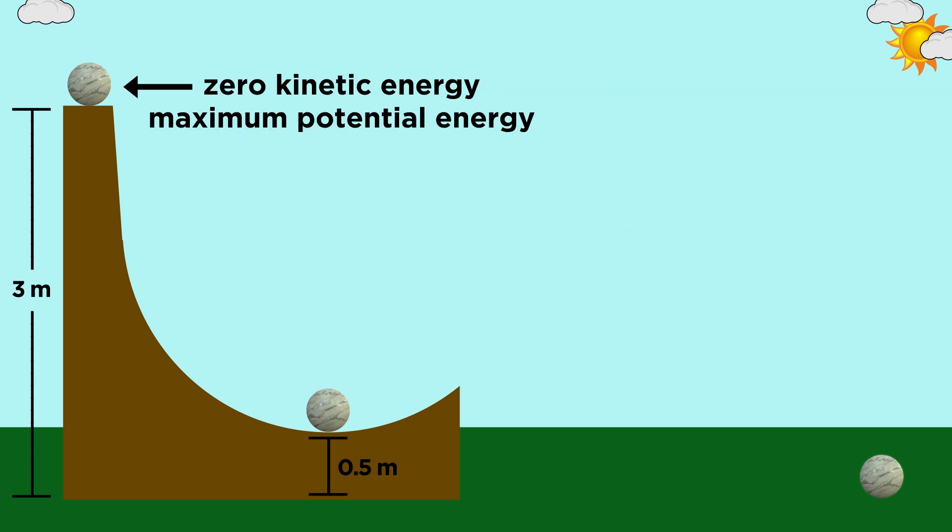At the top of the ramp, before you release the ball, it's not moving, so it has zero kinetic energy, but it does have some potential energy. To find out exactly how much, we use the equation.